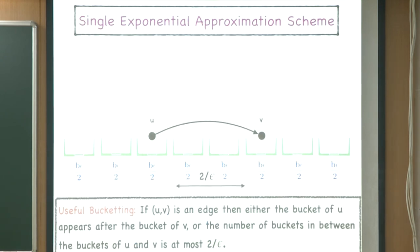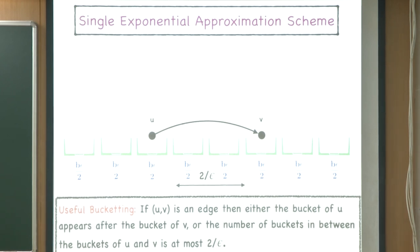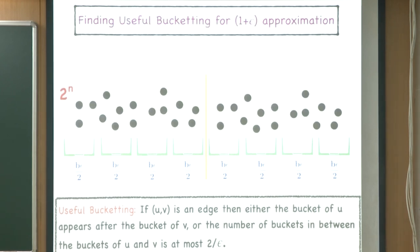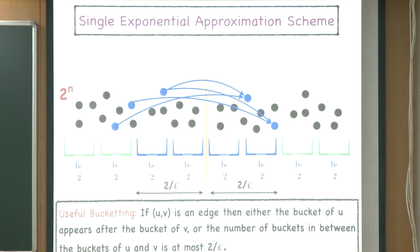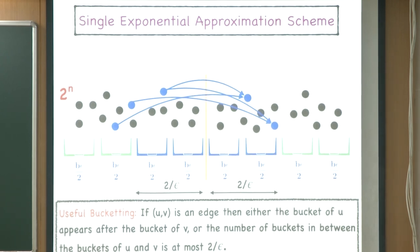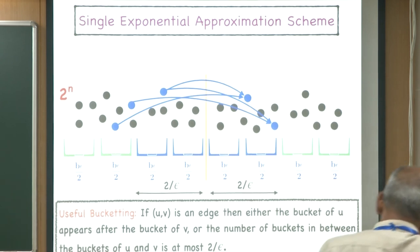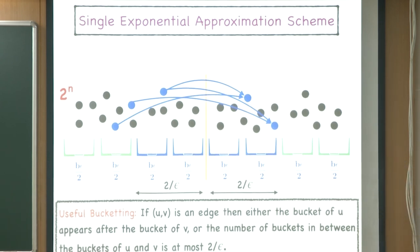For the (1+ε)-approximation, the bucket sizes change and the crossing vertices don't have a unique choice of bucket, but they don't have many choices either — so we branch over those choices. That's the key idea.